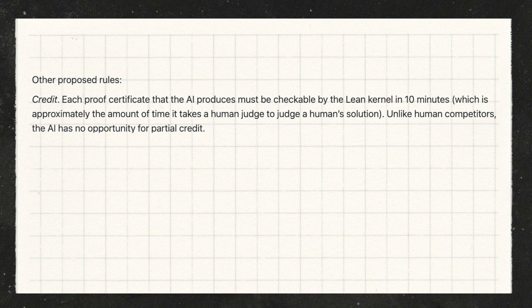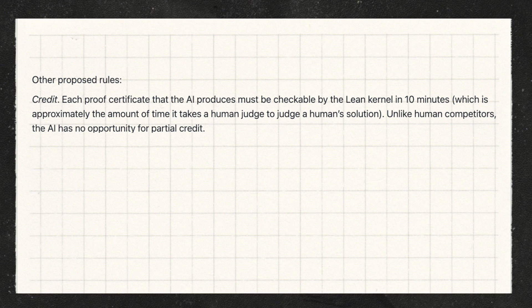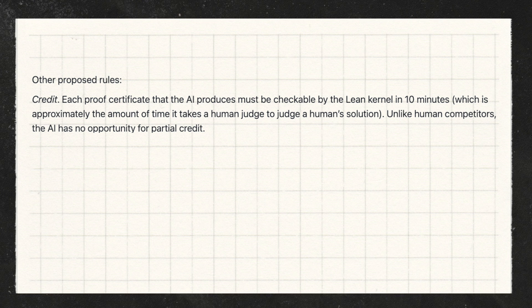Each proof that the AI produces must be checkable in 10 minutes, which is approximately the amount of time it takes a human judge to judge a human's solution.